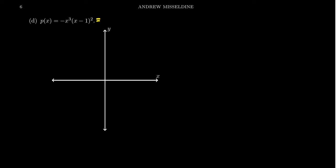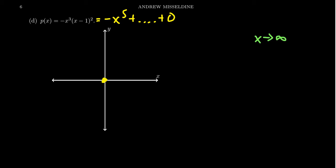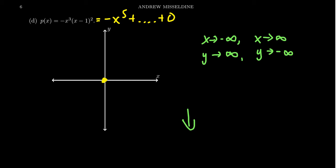The first thing is to think of the end behavior. If we multiply this out, we take negative x cubed times x squared, which gives us negative x to the fifth — that's our leading term. The constant term is 0 because this is x minus 0 cubed, so you get 0 times 1, making the constant term 0. So we're going to go through the origin. Our end behavior — because it's an odd monomial but negative — means that as x approaches infinity, y approaches negative infinity, pointing to the bottom right. And as x approaches negative infinity, y will approach infinity, pointing up on the left.